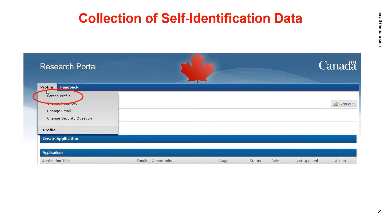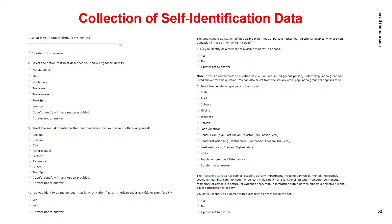Let's start with the collection of self-identification data. Click on Profile, then User Profile to get to the screen. You may have completed this upon submitting your NOI — please update this if necessary. The collection of self-identification data is driven by the Government of Canada's commitment to equity, diversity, and inclusion in the federal research enterprise. Self-identification information is not shared with members or reviewers. It is collected for program operations including recruitment for merit review processes, planning, performance measurement, monitoring, evaluation, and audits. It may also be used in aggregate to report to government or the public, in a format that ensures protection of individual identity.